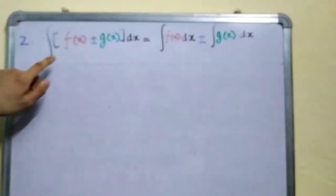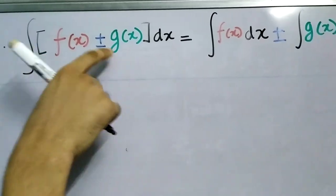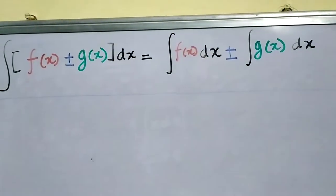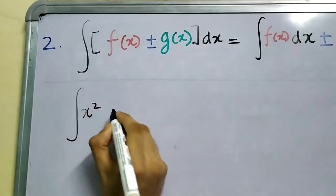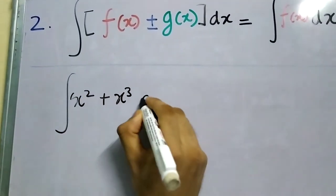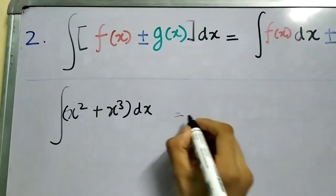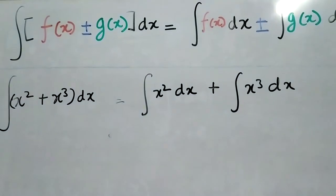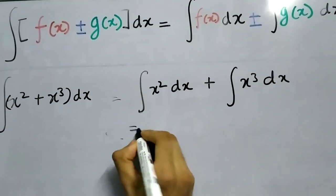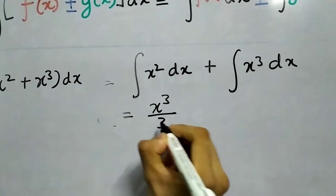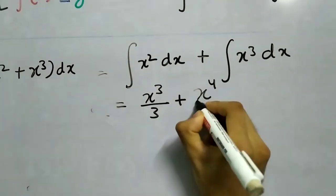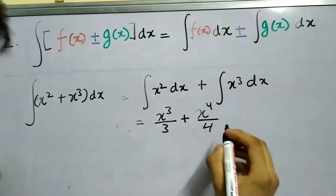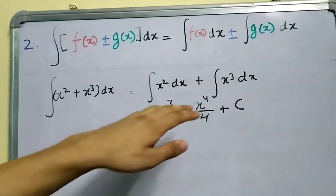Here is our second result: the integral of f(x) plus or minus g(x) dx is the same as taking the individual integrals and adding or subtracting them. For example, the integral of x squared plus x cubed dx equals the integral of x squared plus the integral of x cubed. This gives x to the power 2+1 divided by 2+1, so x cubed by 3, plus x to the power 3+1 divided by 3+1, which is x to the 4 divided by 4, plus a constant c.